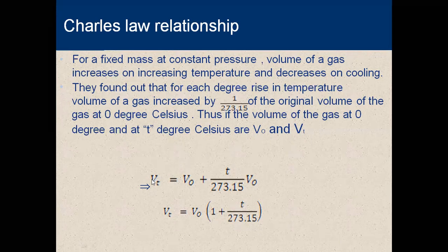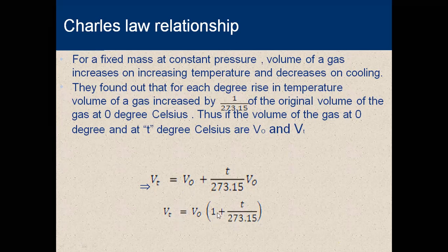Mathematically, the final volume Vt equals the initial volume V₀ plus (1/273) times V₀ times t — that is, the initial volume plus the changed volume. If you want to find the change in volume, you add the initial volume plus the changed volume at temperature t.